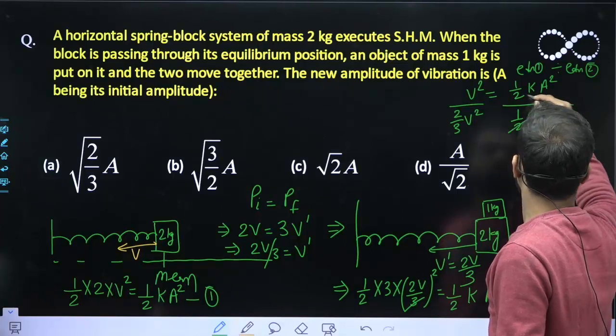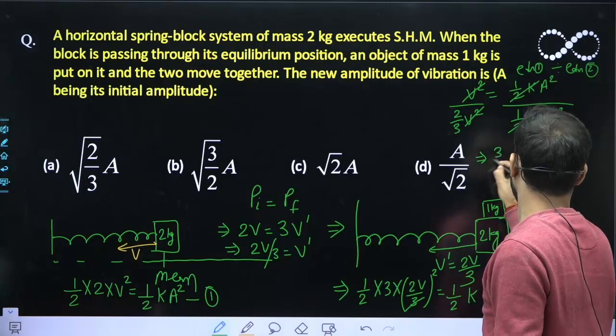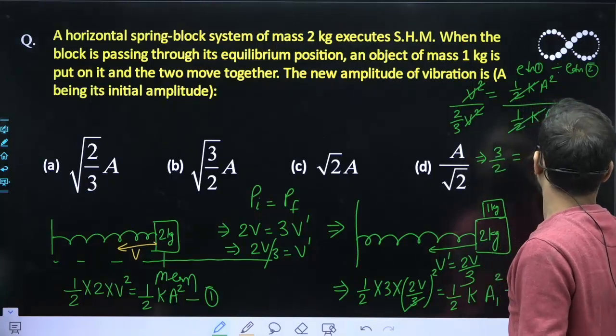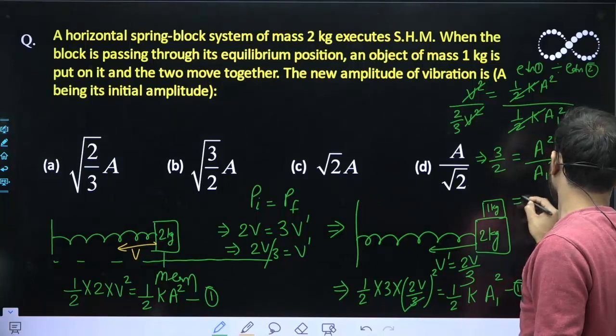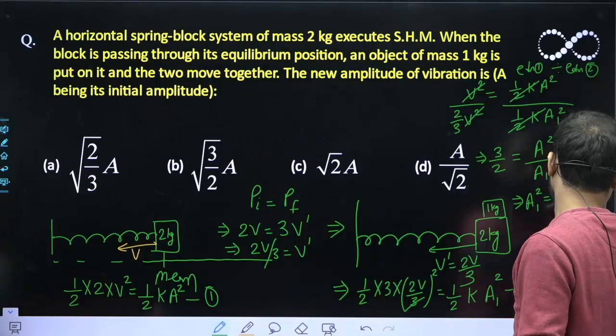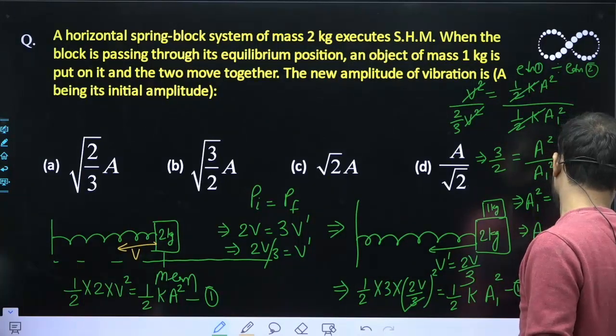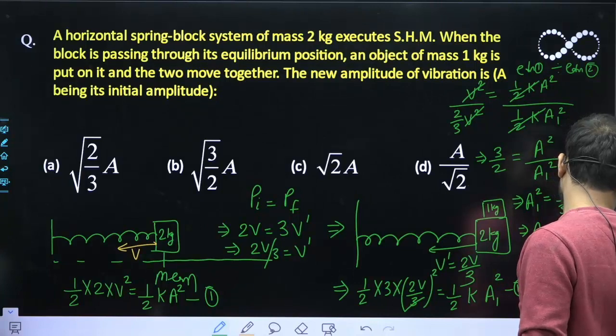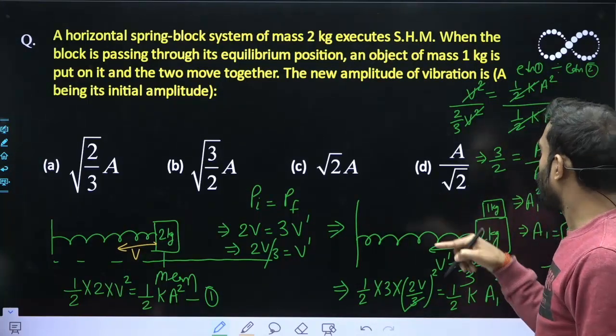So this will also get cancelled out from here, V_A square will get cancelled out, and from here I can say 3 upon 2 will equal A square upon A1 square. So all I need to find is A1 here. So I will say A1 square equals 2 upon 3 A square. So let us see which option is matching 2 upon 3 A.